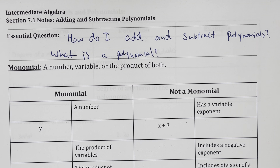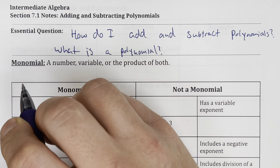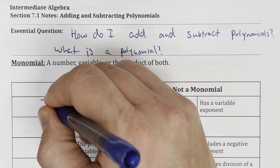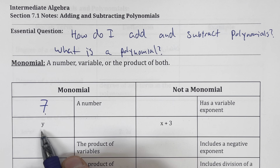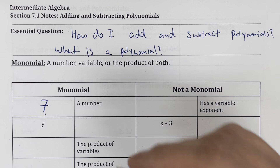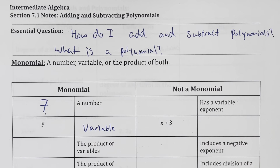A monomial is a number, a variable, or the product of both. So examples of monomials would be just a number — let's say, for instance, 7. 7 is a number, so that is a monomial. A variable is also a monomial, so just something like y would be a monomial.